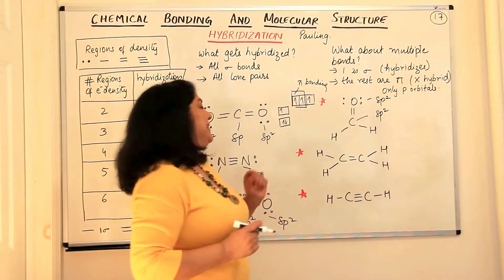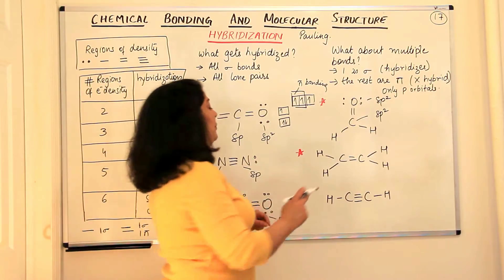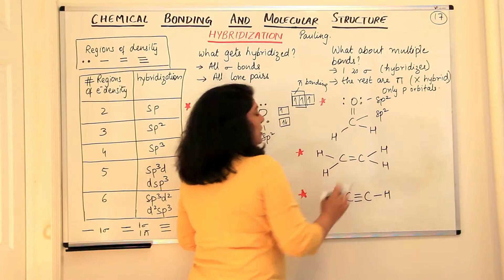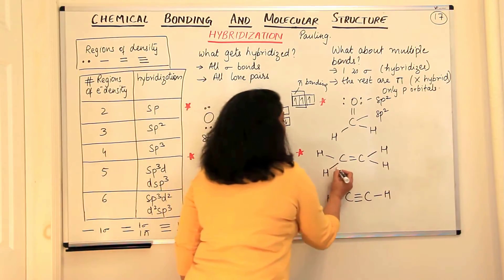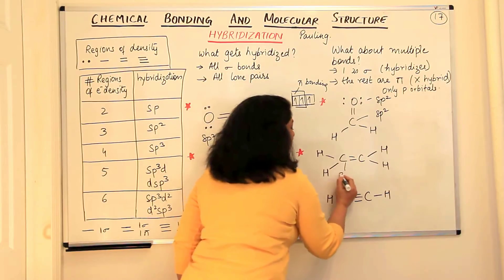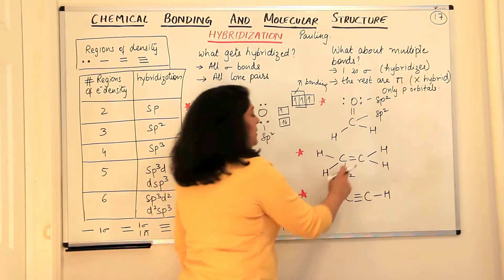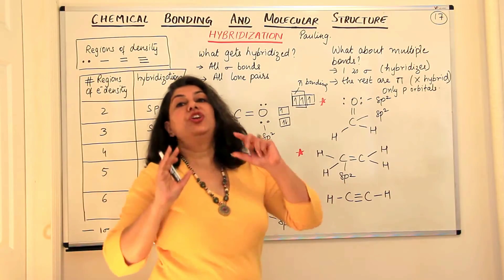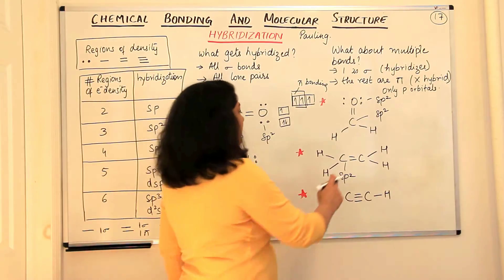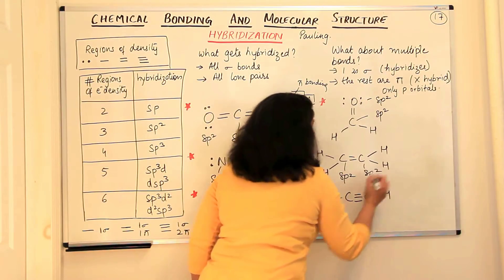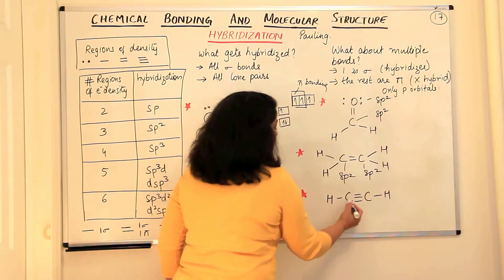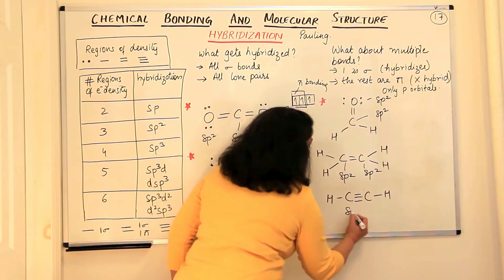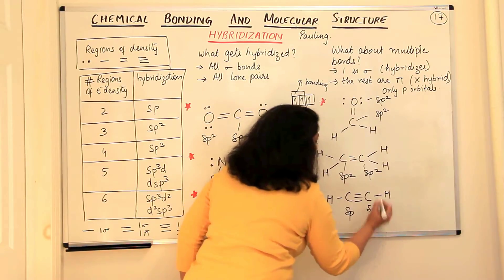Let us now come to ethene. In ethene, the hydrogens do not participate in hybridization. Each carbon has three regions of electron density, so it is sp2 hybridized. The pi bond is always from the p orbital that did not participate in hybridization. For ethyne, this carbon has a triple bond and a single bond — two regions of electron density — so it is sp hybridized.